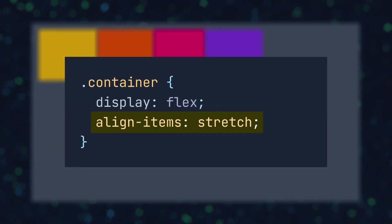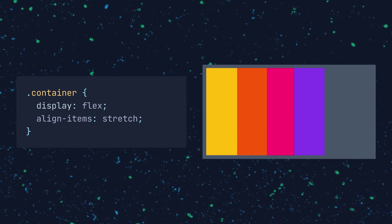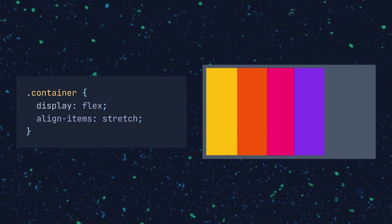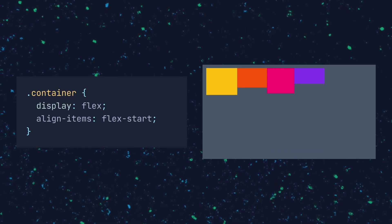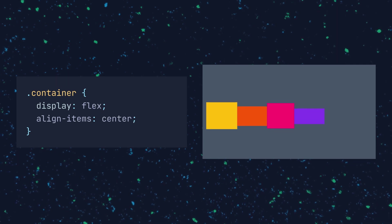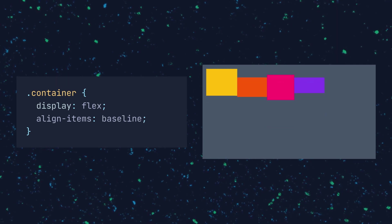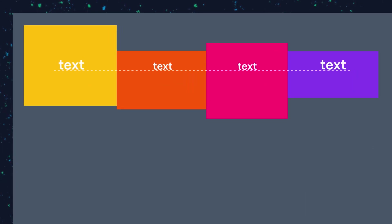Sometimes you'll want to align flex items to the cross axis, which you can do using the align-items CSS property. The default value is stretch, which stretches the flex items to fill the parent container while still respecting the max-height and min-width CSS properties. Flex-start aligns the items to the start of the cross axis, while flex-end aligns them to the end. Center will center all the items, while baseline means that if the flex items contain text, the text will be aligned along the baseline — a common imaginary line upon which the text of each item sits.